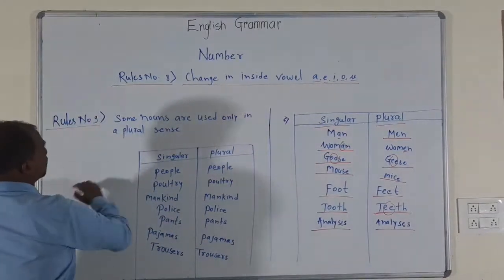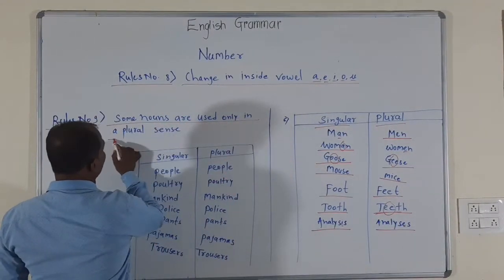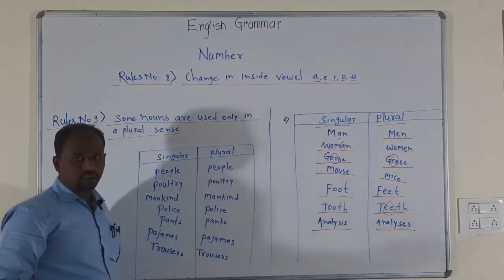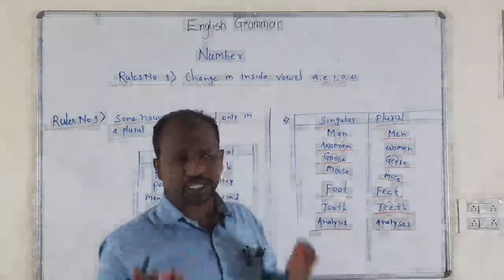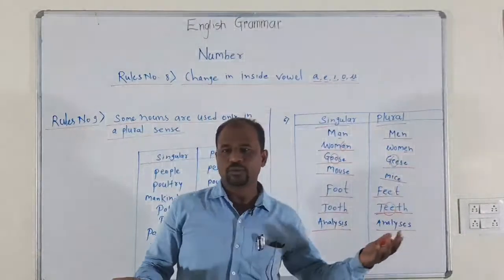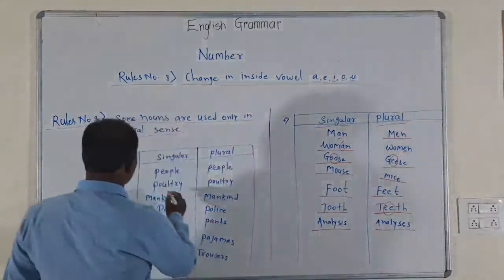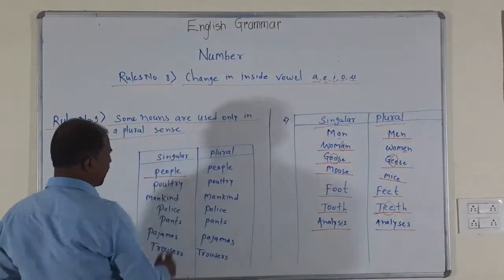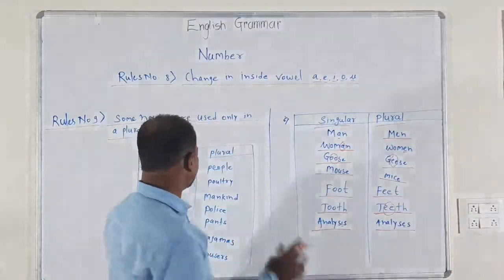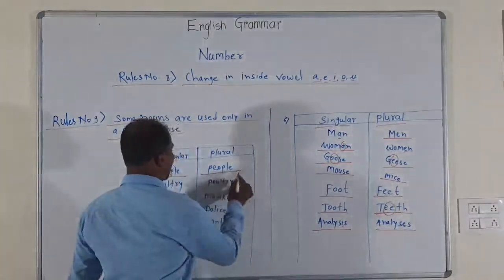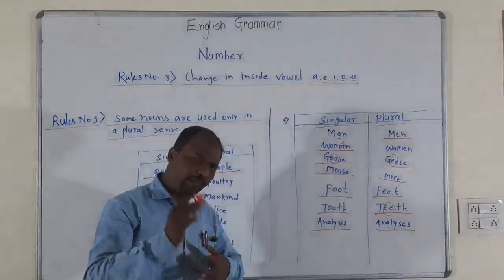Rule number nine: some nouns are used only in a plural sense. Their singular and plural forms are the same. For example, people — P, E, O, P, L, E — people is the same in both singular and plural.